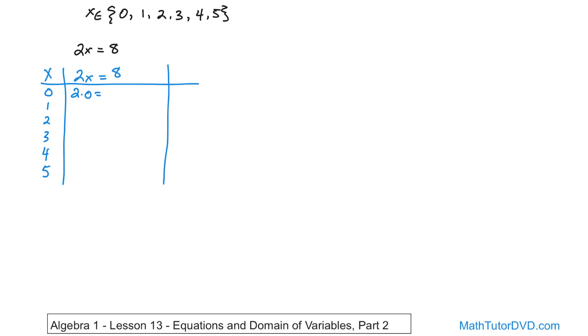2 times 0 is equal to 8. Is that right? Well, on the left, that will give us 0 is equal to 8, so that's no. What if we do 2 times 1 is equal to 8? Well, that's 2 is equal to 8. That's no. 2 times 2 is equal to 8. 2 times 2 is 4 on the left is equal to 8. That's no.